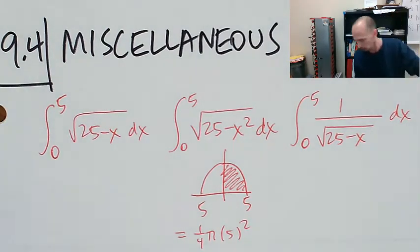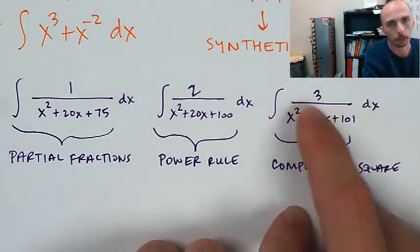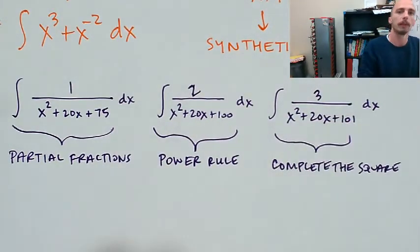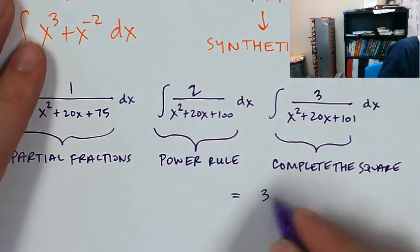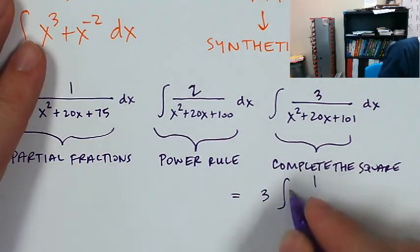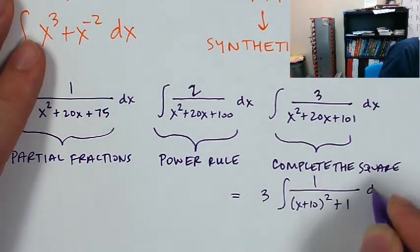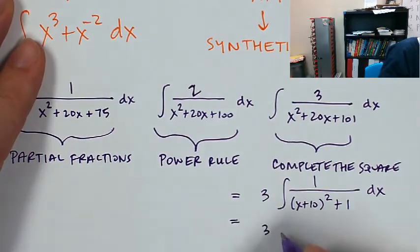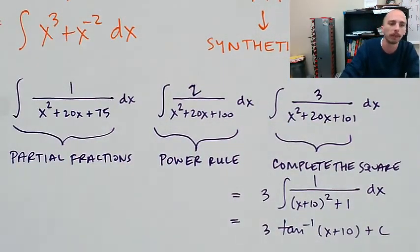For complete the square, I really believe that if it was to show up on your AP exam, it would look like this, where it would be one bigger than a perfect square in the denominator. Maybe I'll do this one. This is equal to three times the integral of one over x plus 10 squared plus one, which means that's going to be three times arc tangent of x plus 10 plus C. And that's all the examples I got for you for this video.